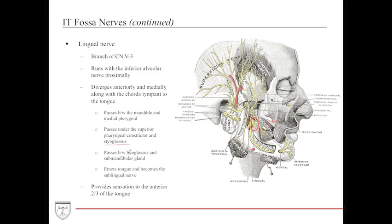The lingual nerve passes between the hyoglossus and the submandibular gland, then enters the tongue and becomes the sublingual nerve. In practical terms, the key points to remember are: it runs with the chorda tympani, it's from V3, it runs with the inferior alveolar nerve proximally, and it provides sensation to the anterior two-thirds of the tongue.